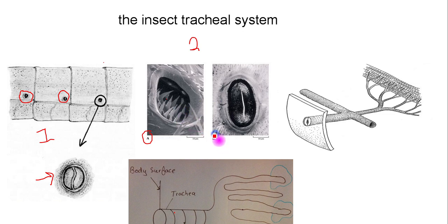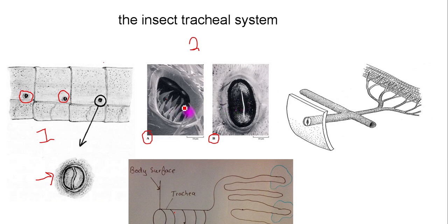Part B of diagram two shows the spiracle is actually closed. That's quite important because the spiracle doesn't remain open all of the time — it spends quite a lot of time closed. This is to prevent water loss from the insect. So in addition to the hairs, the spiracle also closes to prevent water loss.